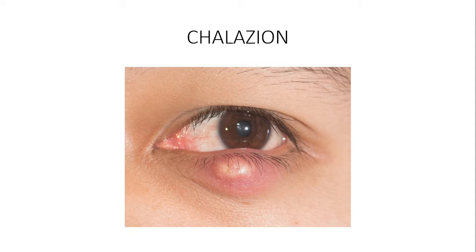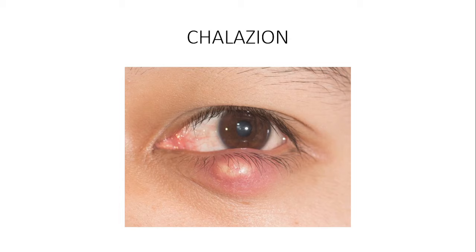What symptoms will a patient with chalazion come with? There is a growth within the eyelid that causes some discomfort. Sometimes if it is within the upper eyelid it may cause drooping of the upper eyelid — blepharoptosis — meaning the patient may not be able to see well through the visual axis, causing a decline in visual acuity because the eyelid has drooped due to the force of gravity.